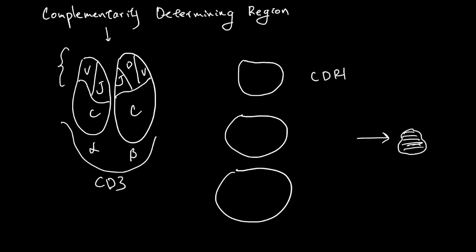And there are three important surfaces that determine how this T-cell receptor can bind to things. Complementarity determining region 1, CDR2, and CDR3. And CDR1 and CDR2 have regions from V of alpha, V of beta, V of alpha, V of beta.